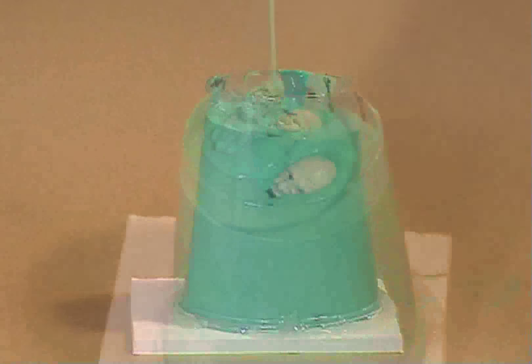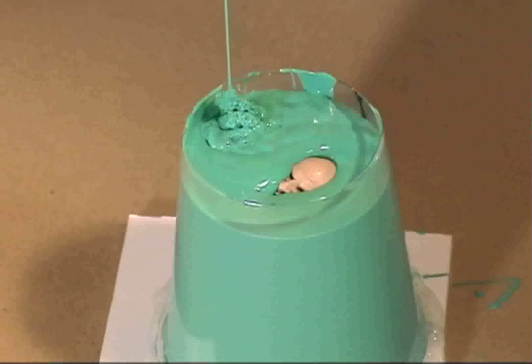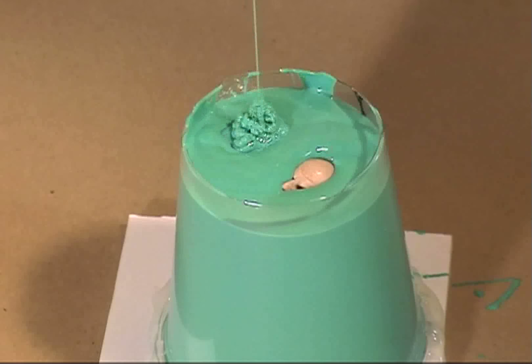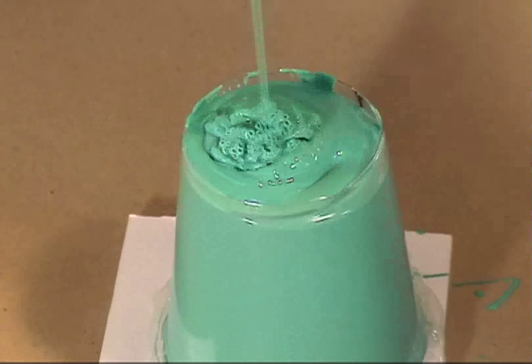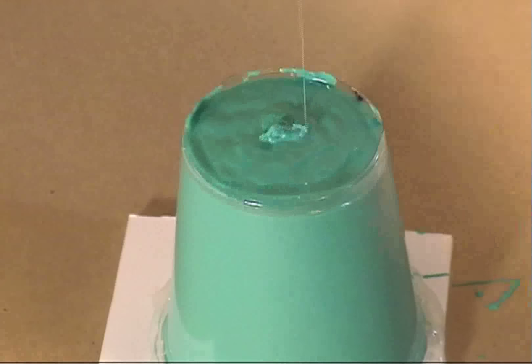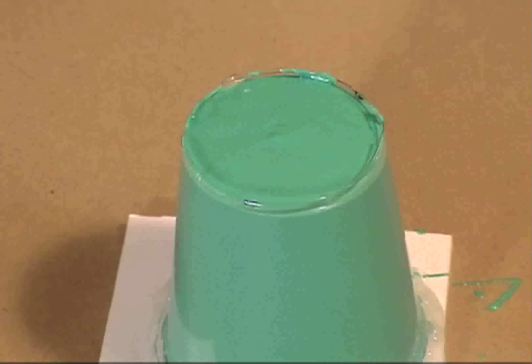The last thing that you'd want to do is just pour one big glob in here because you could guarantee yourself that you'd end up having a silicone that would have holes in it like a sponge. Just keep pouring on the side and let the silicone flow into the face. Don't pour directly on top or that could cause air bubbles.